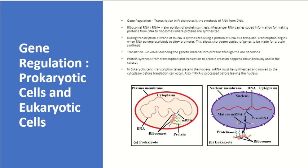This allows short-term copies of genes to be made for protein synthesis. The next process after transcription is translation, which decodes the genetic material now in mRNA and uses it to translate into the protein domain. This uses three chains of nucleic acids called codons for any particular amino acid. Protein synthesis from transcription and translation happens simultaneously in the cytosol of the cytoplasm in prokaryotes. In eukaryotes, transcription specifically happens in the nucleus, and mRNA must be synthesized and then moved out of the nuclear membrane into the cytoplasm before translation can occur. Also, mRNA is processed before leaving the nucleus.